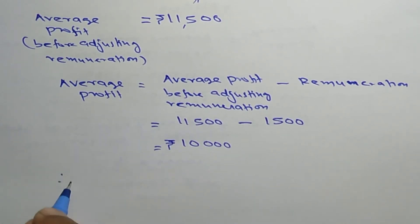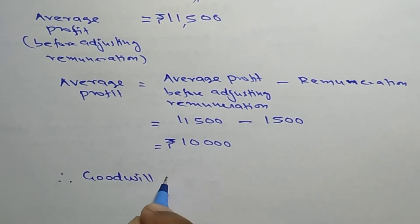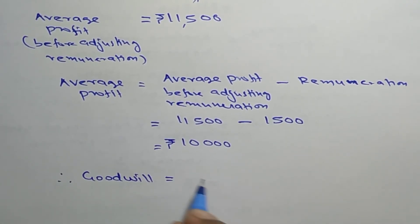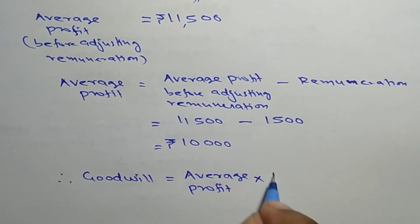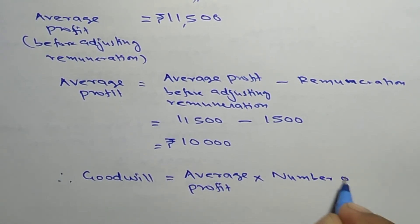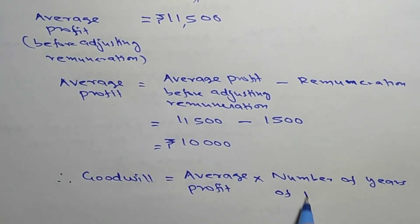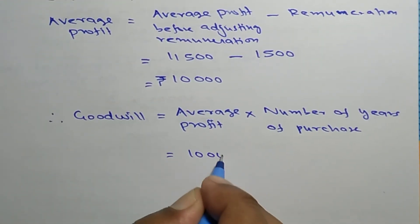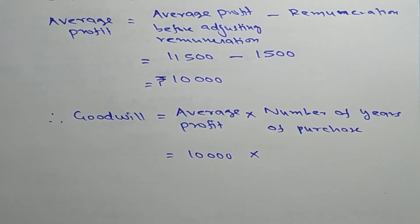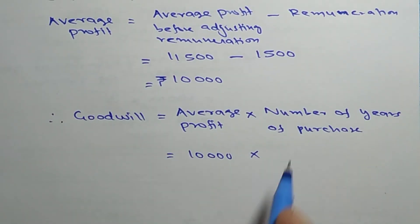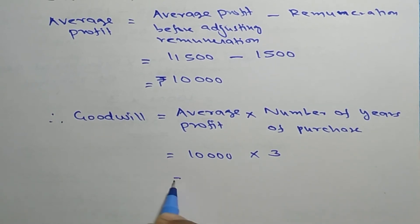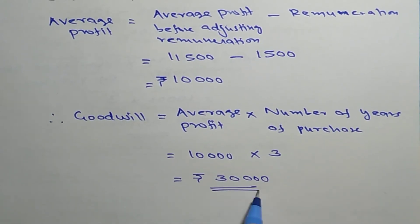Therefore, goodwill. The formula for goodwill is: goodwill is equal to average profit into number of years of purchase. Average profit is 10,000 and the number of years of purchase is given as three years purchase, so it is 3. Therefore goodwill equals 10,000 into 3, which is rupees 30,000. That is the value of goodwill of the firm.